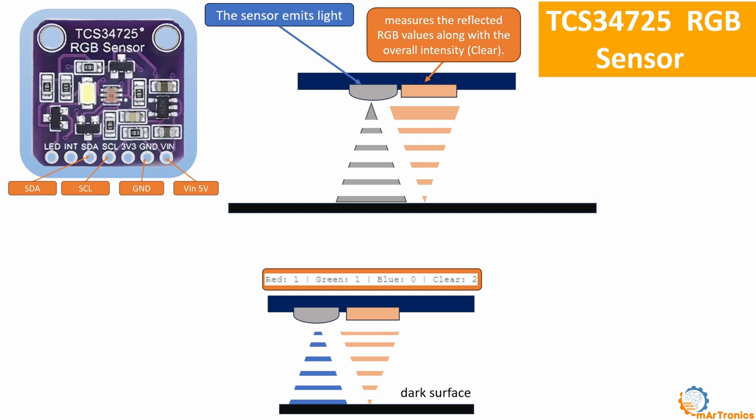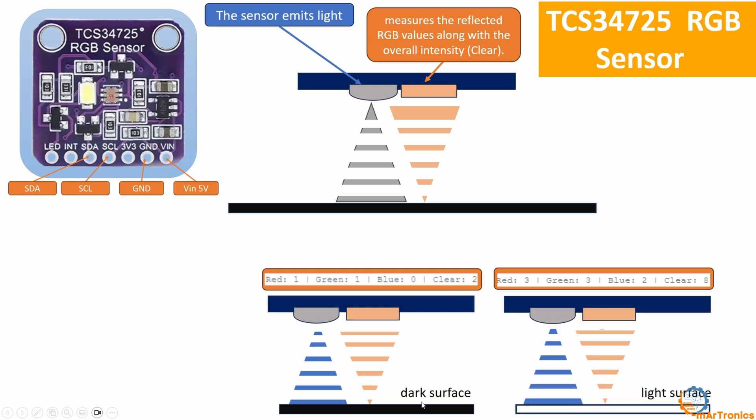The way it works is as follows. The sensor emits light and measures the reflected RGB value in addition to the total intensity. This is what concerns us in this project. In the case of a dark floor, the value of the intensity of the reflected light is small. While in the case of a clear floor such as a white stripe, the value of the intensity of the reflected light is greater.